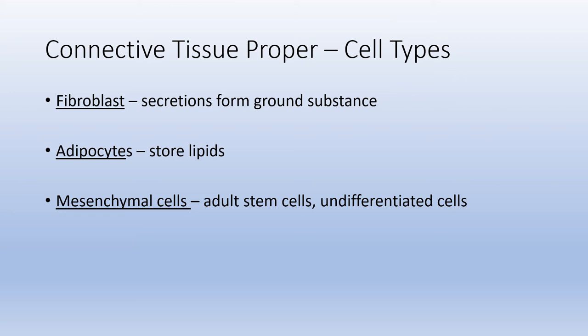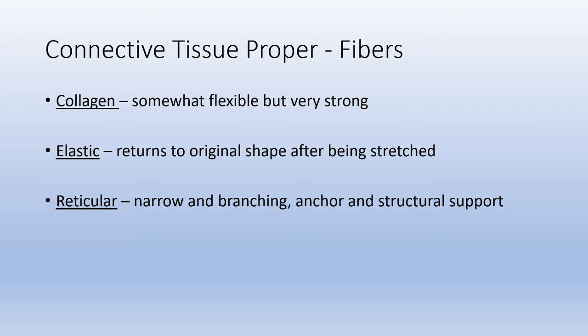In connective tissue proper, different types of cells are present. Fibroblasts secrete substances that help form the ground substance. Adipocytes store lipids. Mesenchymal cells are adult stem cells — undifferentiated cells that have not yet specialized into any particular cell type. The types of fibers in connective tissue proper include collagen, elastic, and reticular. Collagen fibers are very strong with some flexibility. Elastic fibers can be stretched but return to their original shape. Reticular fibers are very narrow with a lot of branching and help anchor and support tissue.